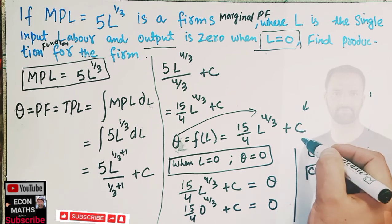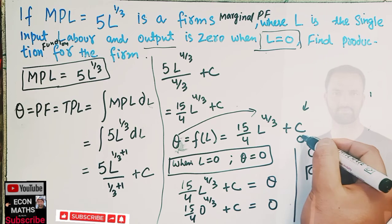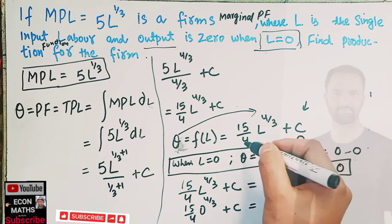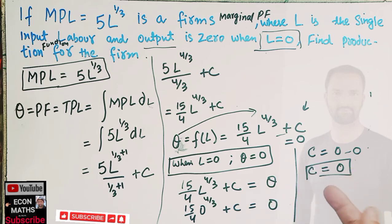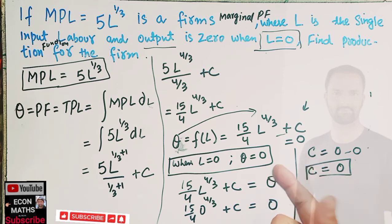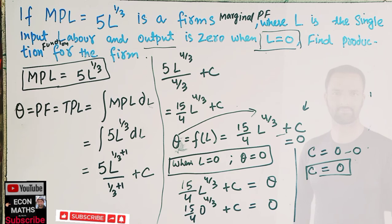So in place of C we have 0, and this is our final production function: Q(L) = 15/4 times L to the power 4/3. If you are confused about where the constant of integration came from, it has been explained in the rules of integration in full detail, including how to use the constant of integration and its significance.